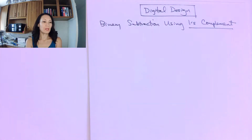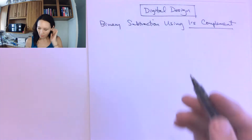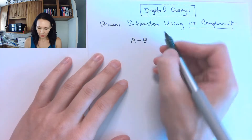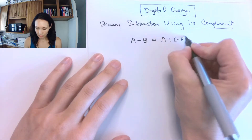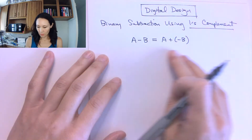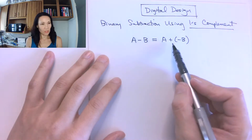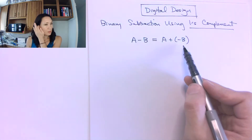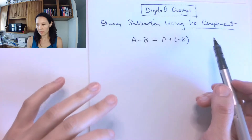Recall that we can change any subtraction problem into an addition problem by negating the second argument and replacing the minus with a plus. If we have a minus b, this can be changed into the addition problem a plus negative b. So if we're doing binary arithmetic, we can avoid doing subtraction by changing it to an addition problem and turning our second number to a negative number. You've seen previously in this class that we can do that using one's complement, two's complement, or the sign and magnitude convention.